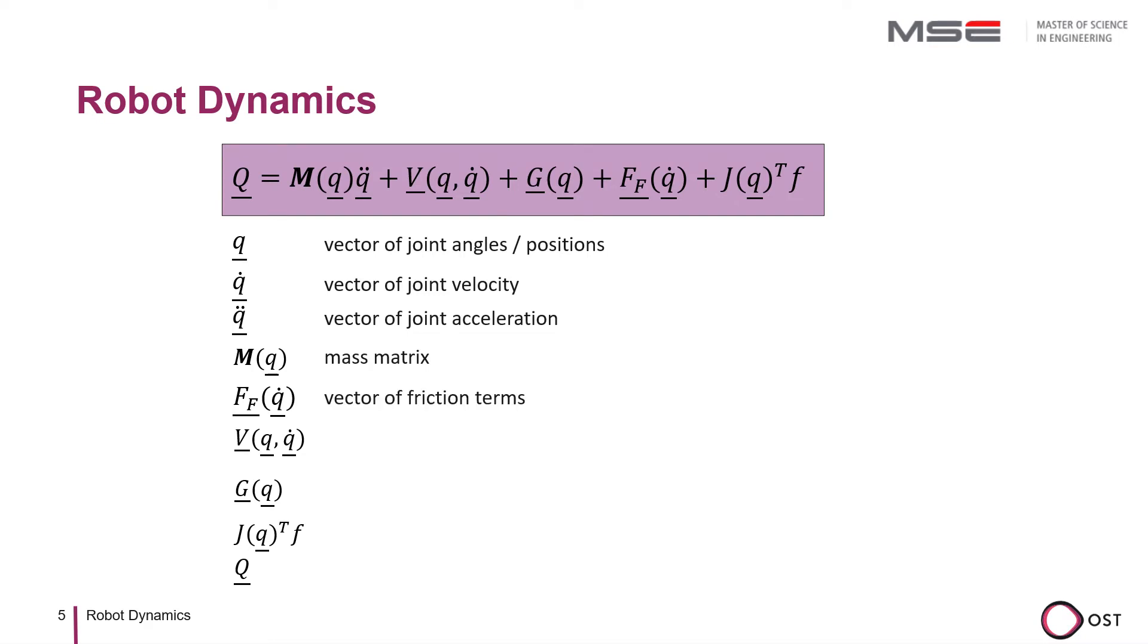Friction is modeled in the term FF. The term V represents the so-called false forces. These are Coriolis and centrifugal terms.